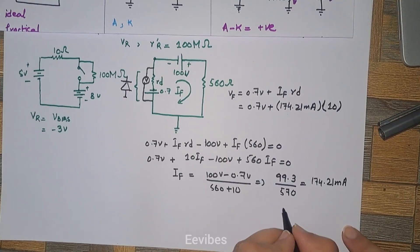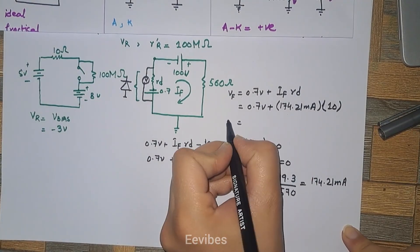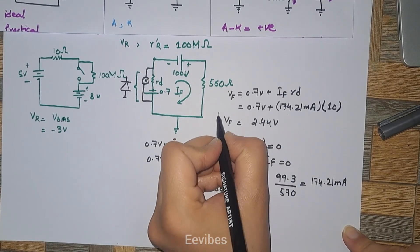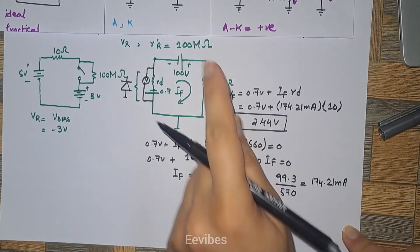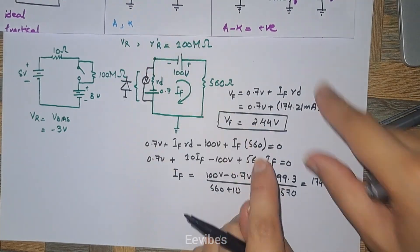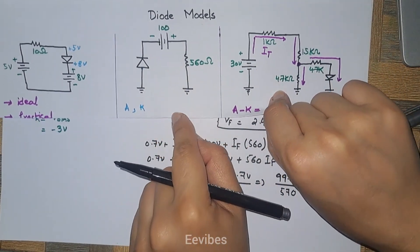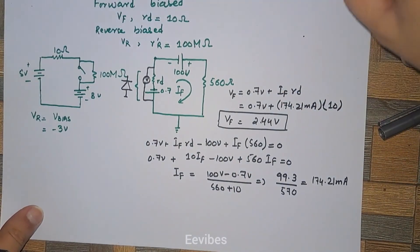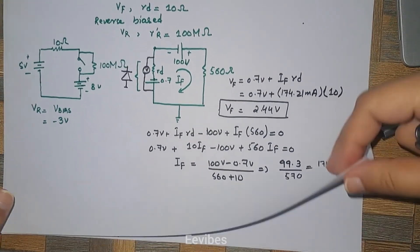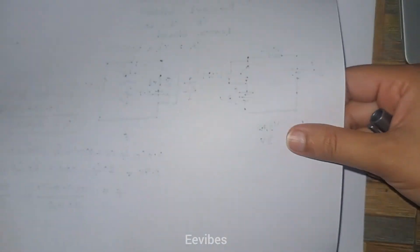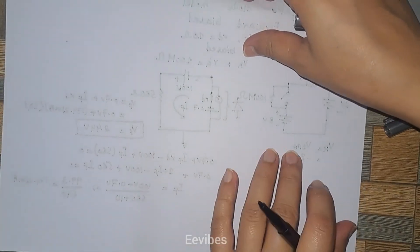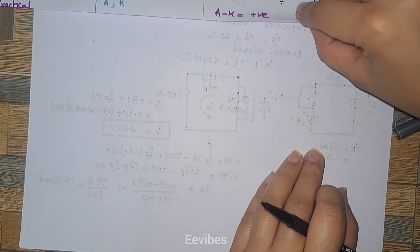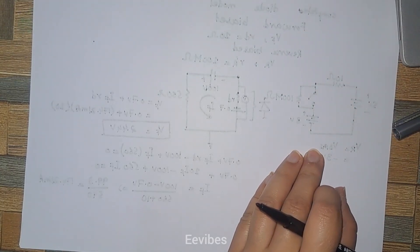Substituting the values: V_F equals 0.7 volts plus 174.21 milliamperes times 10 ohms, which simplifies to 2.44 volts. These are the voltages present across the diode when it is forward biased and the complete diode model is considered. The last circuit is a bit more complex and will be solved in the next part of the video. Thank you for watching.